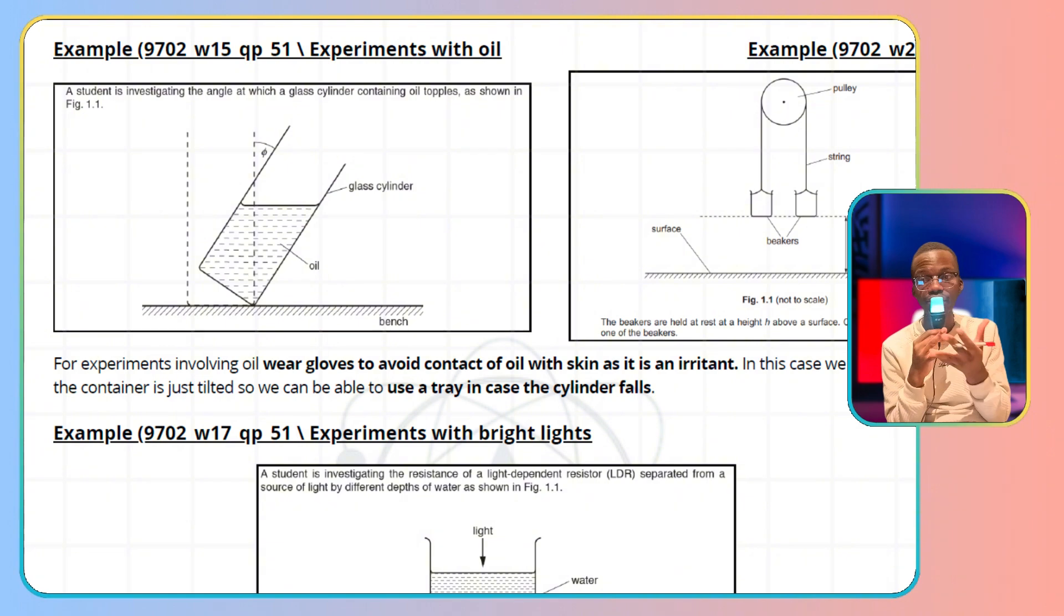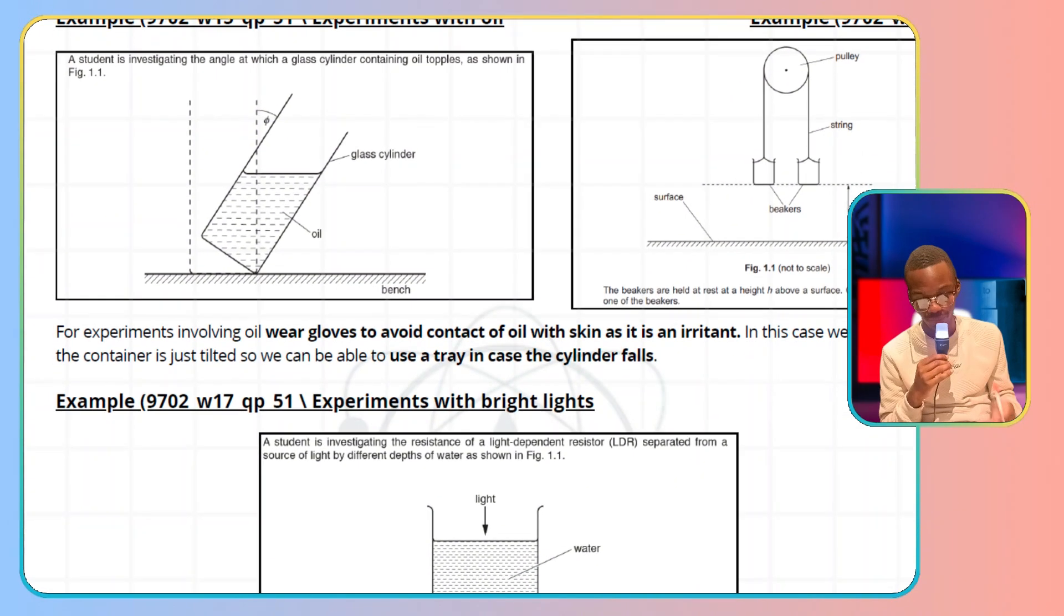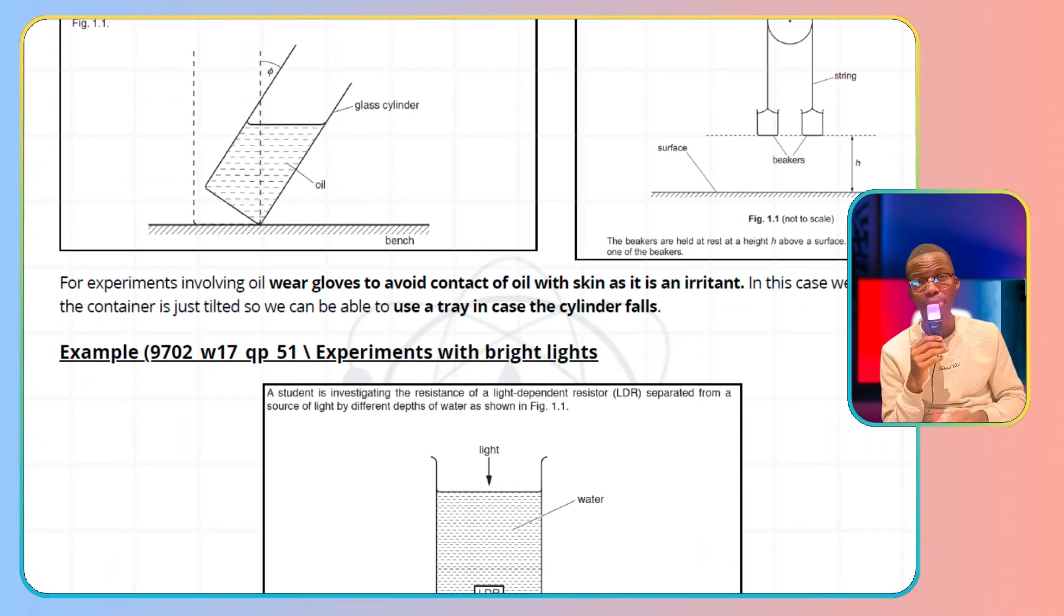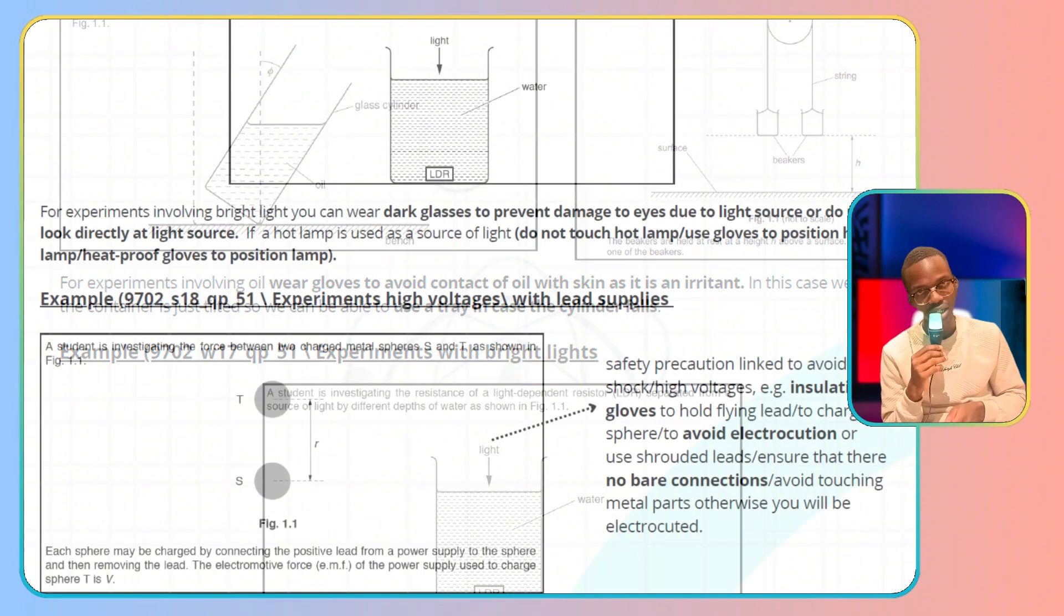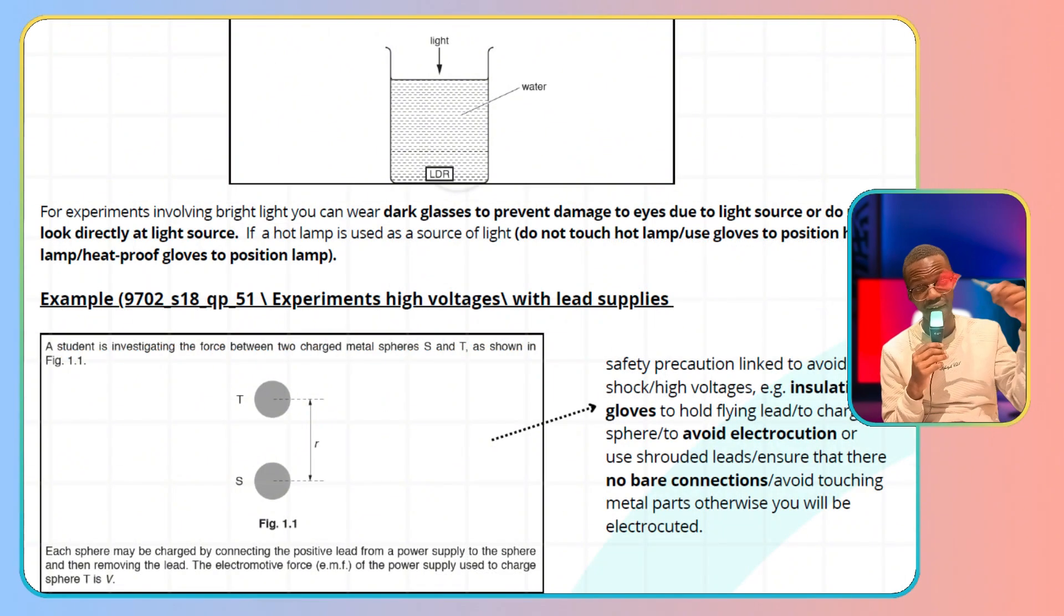Experiments with bright lights. You're going to see light experiments. For example, I've added the categorization of questions in the document. A student is investigating how the resistance of a light-dependent resistor separated from a light source can vary by different depths.